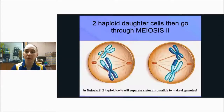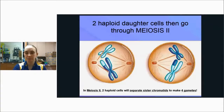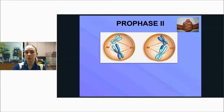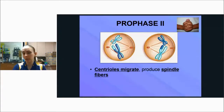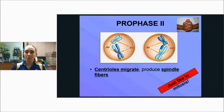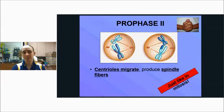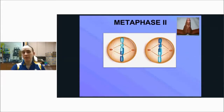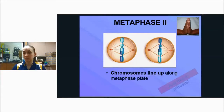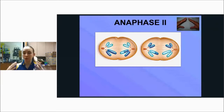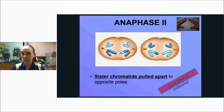Two haploid daughter cells then go through meiosis two. In meiosis two, haploid cells separate the sister chromatids to make four gametes. Prophase two: centrioles migrate and produce spindle fibers, just like in mitosis. Meiosis two is just like mitosis, except you've got two cells going through it at the same time. Metaphase two: chromosomes line up along the metaphase plate, just like in mitosis. Anaphase two: sister chromatids are pulled apart to opposite poles, just like in mitosis.